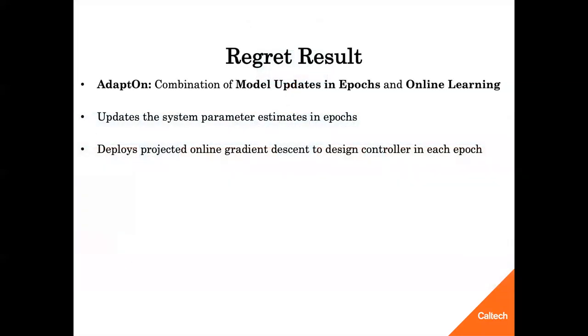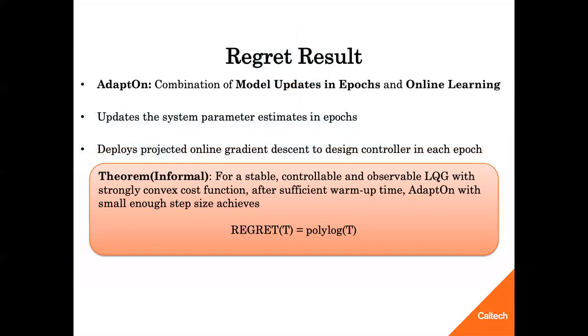In short, AdaptOn is a combination of model updates in epochs and online learning. The system parameter estimates are updated adaptively, and in between these updates, the controllers continue to improve using gradient descent. For a stable, controllable, and observable LQG with strongly convex cost function, AdaptOn achieves polylogarithmic regret. This is the first logarithmic regret result in adaptive control of partially observable linear dynamical systems.